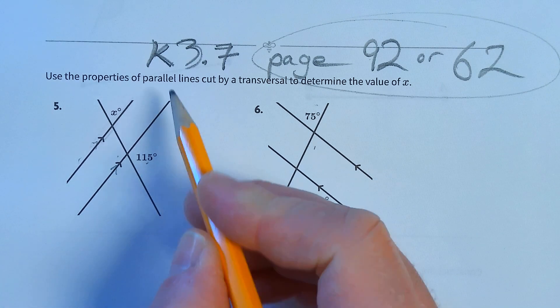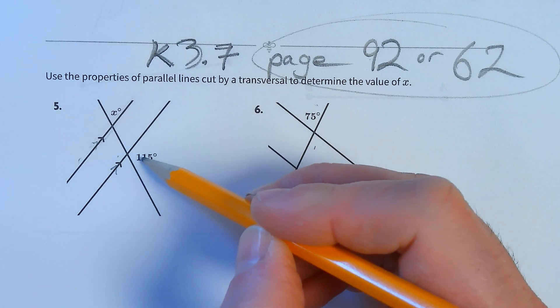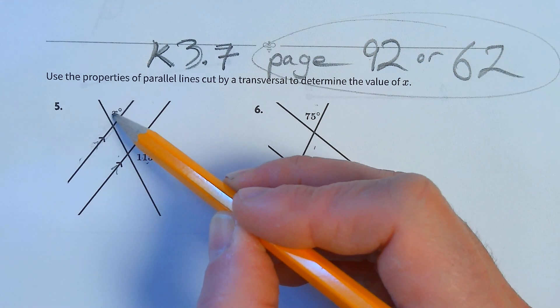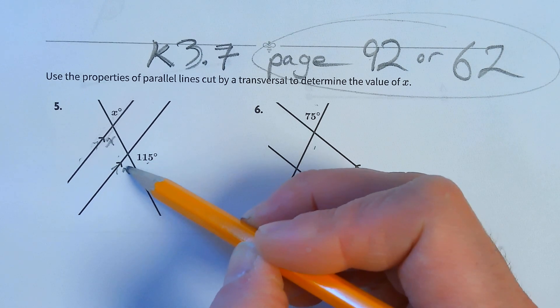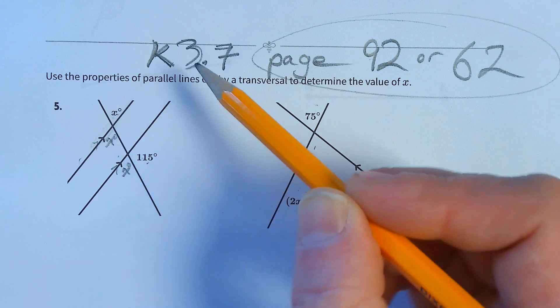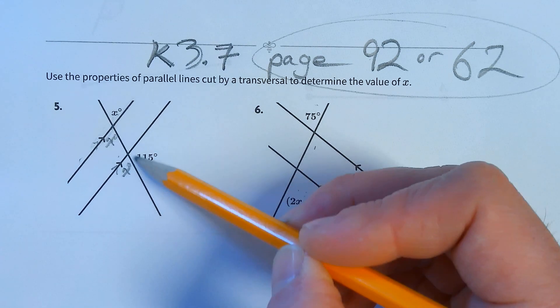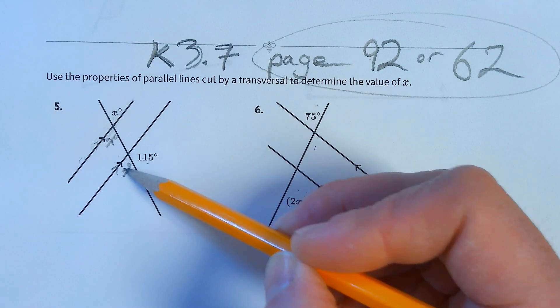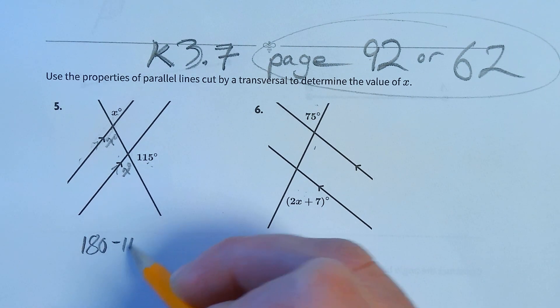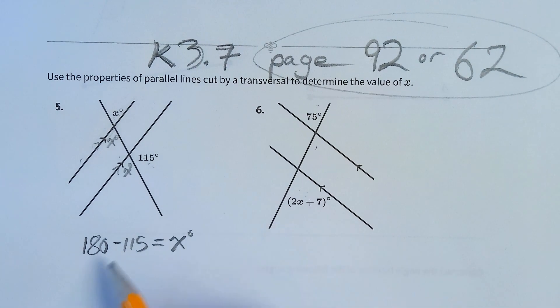So we know corresponding angles are the same. There's a bunch of different ways to get this. This is x, and then this is corresponding, so this is x. This is x because of vertical angles, across this vertex. Then corresponding. Then 180 minus 115, which is, I believe it is 65.